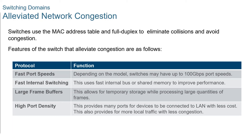Characteristics of a switch that alleviate network congestion include the following. First, fast port speeds — depending on the model, switches may have up to 100 Gbps port speeds. Most access layer switches support 100 Mbps and 1 Gbps port speeds. Distribution layer switches support 100 Mbps, 1 Gbps, and 10 Gbps port speeds. Core layer and data center switches may support 100 Gbps, 40 Gbps, and 10 Gbps port speeds. Switches with faster port speeds cost more but can reduce congestion.